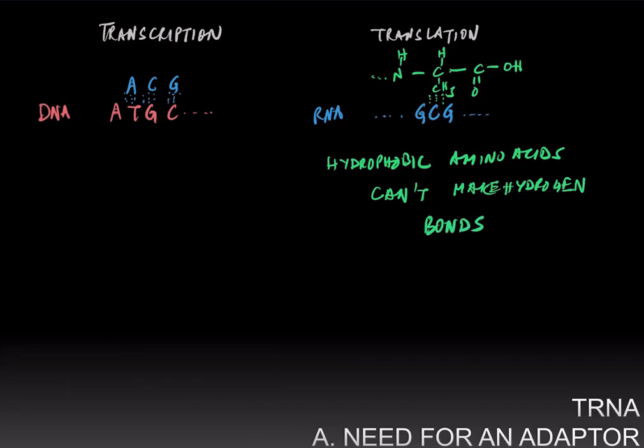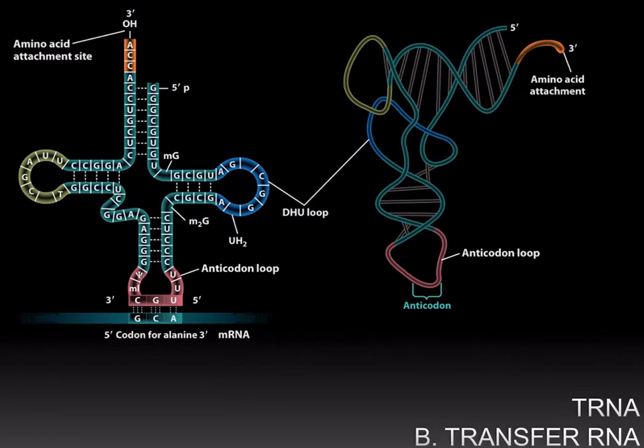And so Francis Crick proposed that there must be an adapter that intermediates between RNA and amino acids. And it turns out that he was right. And this intermediary, this adapter, is known as transfer RNA or tRNA.